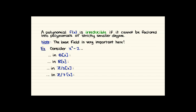Similar to prime numbers, we say that a polynomial f(x) is irreducible if it cannot be factored into polynomials of strictly smaller degree. The base field is very important here. For example, consider x squared minus 2. If we think of it as a polynomial in Q adjoin x, then it's irreducible, since there's no rational number whose square is 2. But in R adjoin x, we have x squared minus 2 equals (x minus root 2)(x plus root 2), so there it factors and is not irreducible — it's reducible.